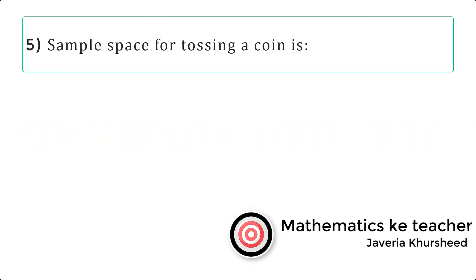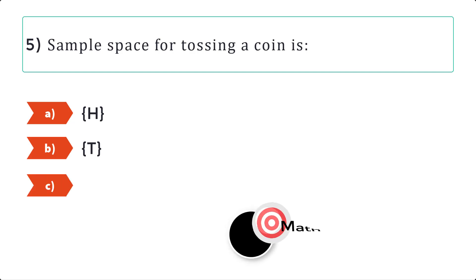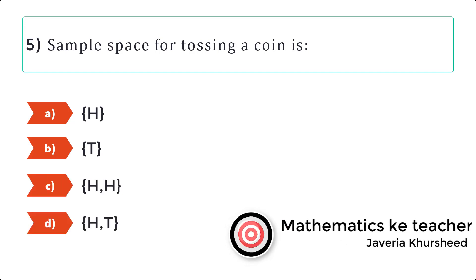Question 5: Sample space for tossing a coin is. A. Head, B. Tail, C. Head, D. Head tail.